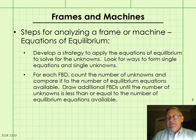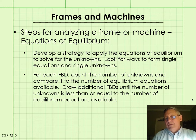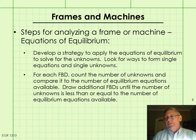If after the second free body diagram you still have more unknowns than equations, you'll have to go to a third free body diagram and so on, until you reach the point where the number of unknowns is less than or equal to the number of equations available to you.